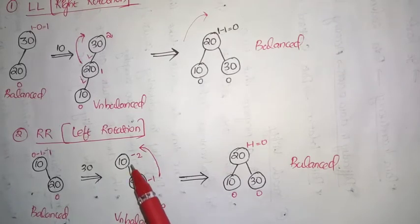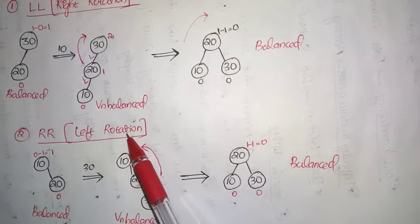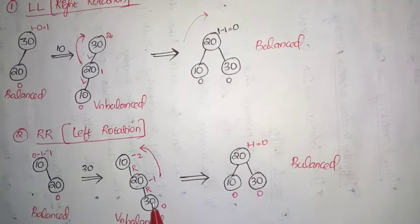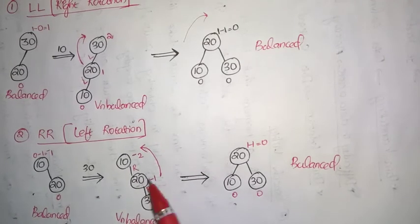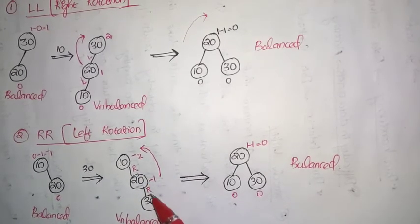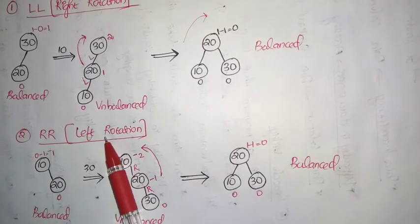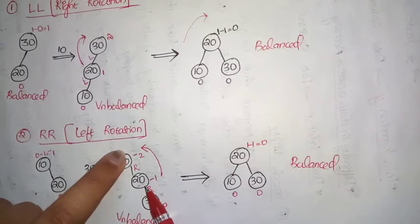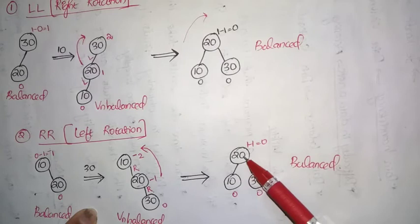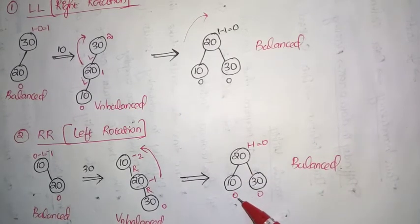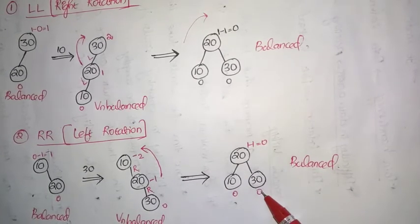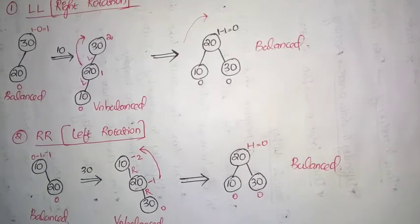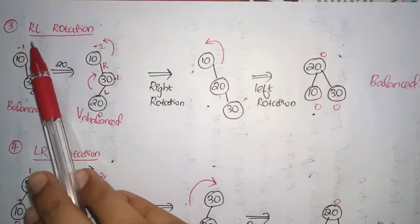This is the case where we need to perform a Left rotation — insertion was carried out at the right child of the right node (RR). In such an RR scenario we perform a left rotation, which is in the anti-clockwise direction. After the left rotation, 20 moves upward and 10 moves downward. The balancing factor of the root node becomes height of left subtree 1 minus height of right subtree 1, which is 0. This node is now balanced.